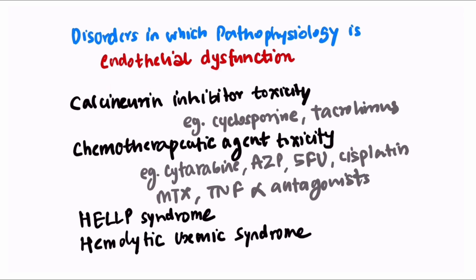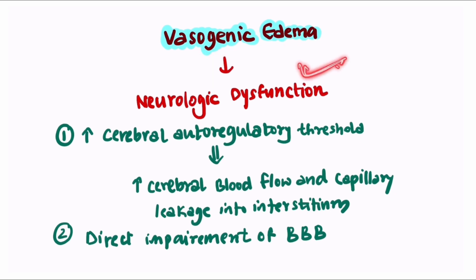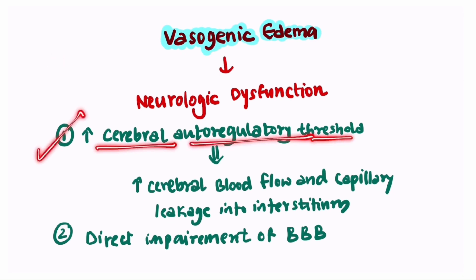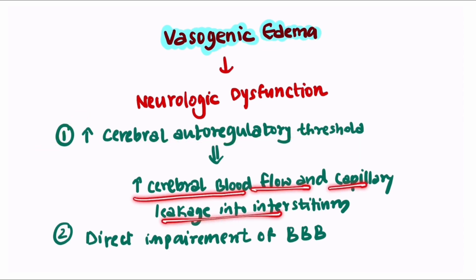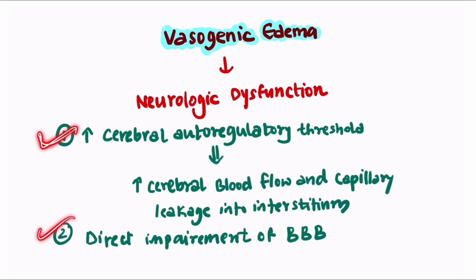We are also well aware of HELLP syndrome and hemolytic uremic syndrome as causes. In PRESS syndrome, there is vasogenic edema which leads to neurological dysfunction. Both mechanisms can be seen: the first is exceeding the cerebral autoregulatory threshold, leading to increased cerebral blood flow and capillary leakage into the interstitium; the other is direct impairment of the blood-brain barrier.